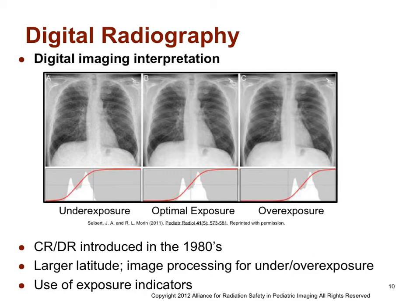Digital radiography, including CR and DR, was introduced into clinical departments in the 1980s as a way to create a digital image as opposed to an analog screen film. While the CR and DR processes differ, both provide the ability to post-process and manipulate the image. CR is also considered to have a large exposure latitude — meaning a large amount of error in technique is acceptable and we can still have a very acceptable image for diagnostic quality, whether something is underexposed or overexposed.